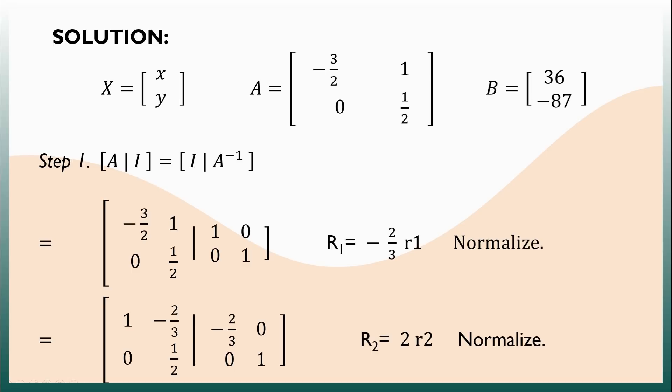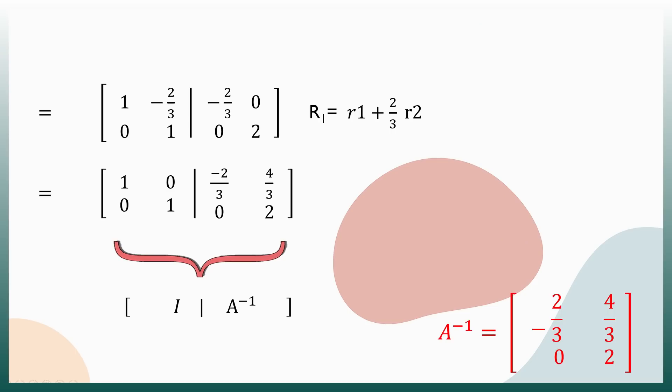Next, we have 1 half here in row 2. What do we do? We will again normalize it by multiplying it by 2. 0 times 2 equals 0, and 1 half times 2 equals 1. On the right side, 0 remains 0 and 1 times 2 equals 2. We can see that we have achieved our target value of 1 on the main diagonal, but we have to reduce the rest of matrix A to 0 for it to become truly inverse.